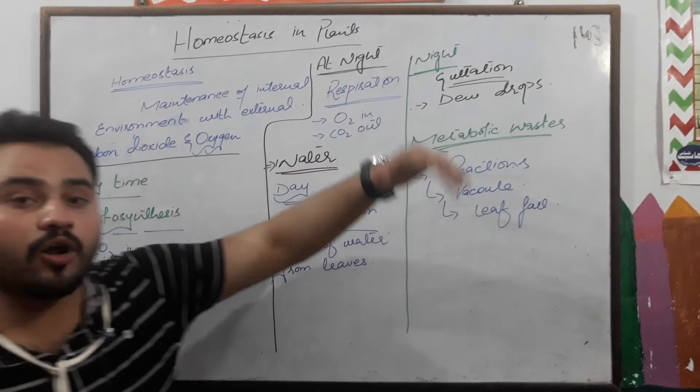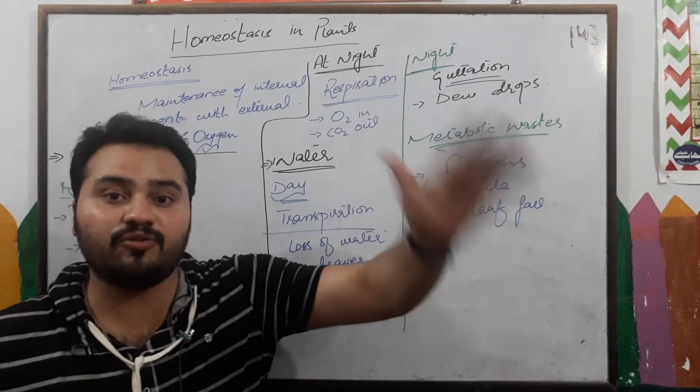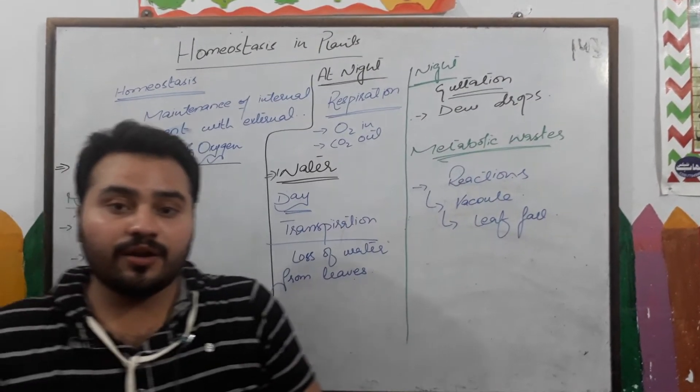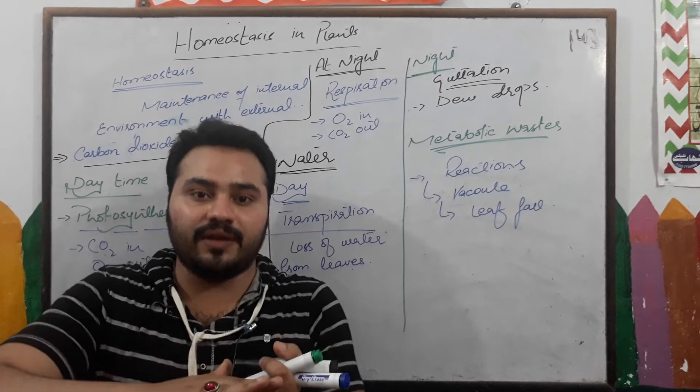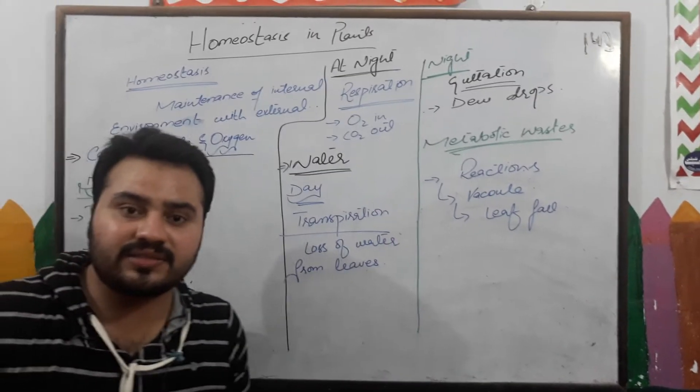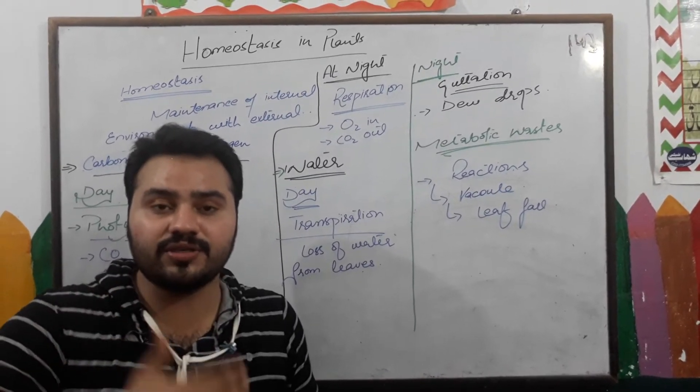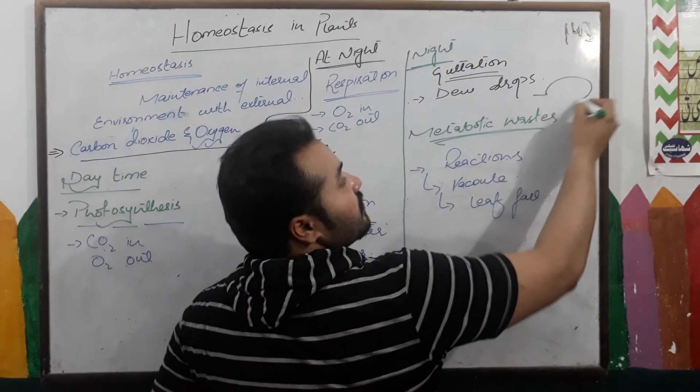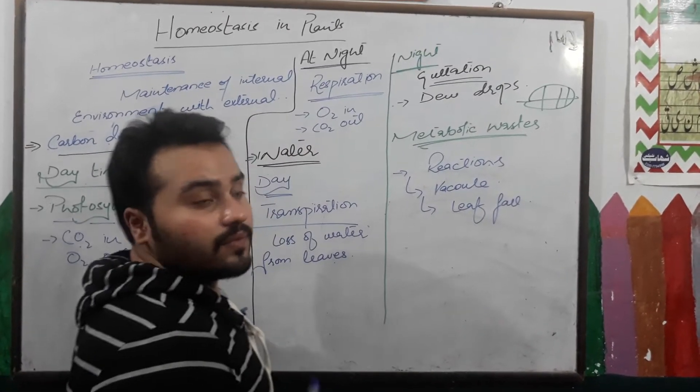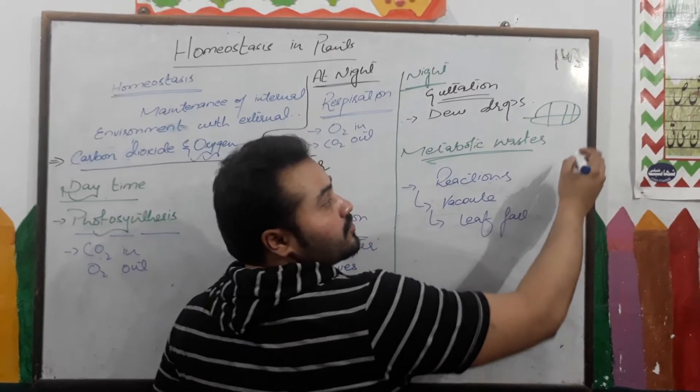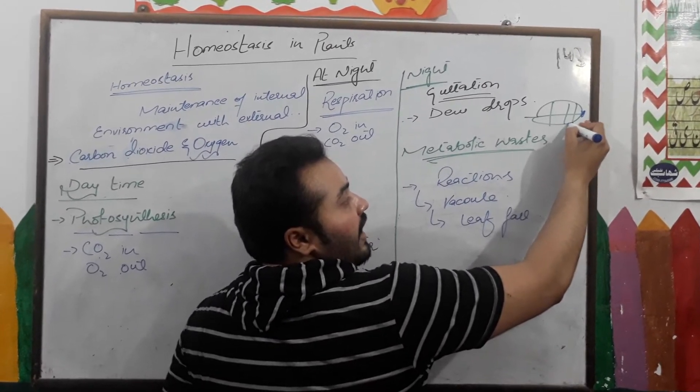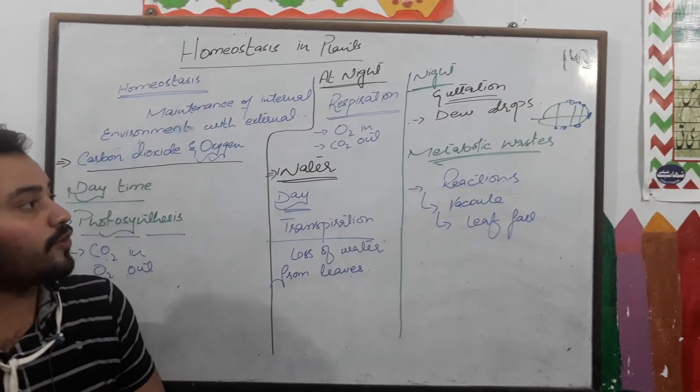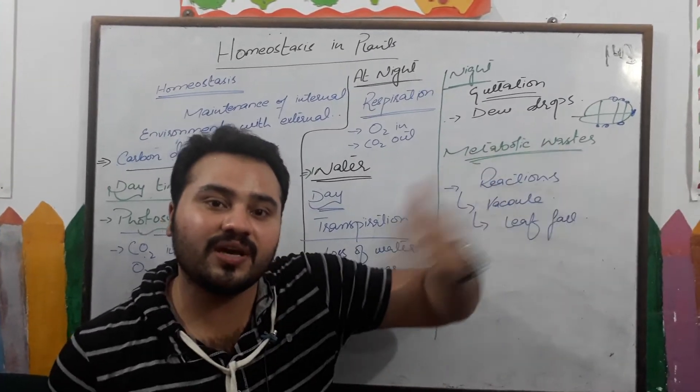At night, how can plants expel out their water? Through guttation. What is guttation? When dew drops on the surface of the leaves. At night, plants are still losing their water. How? Let's suppose here we have a leaf. Plants have some extra pores at the tips or at the edges of the leaves.